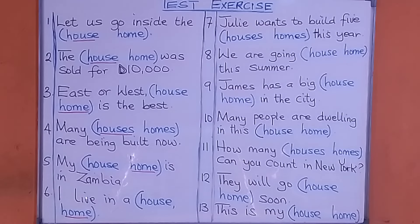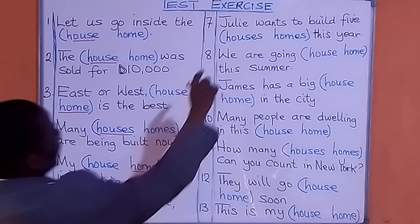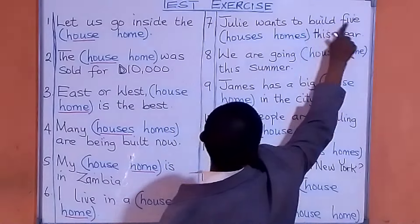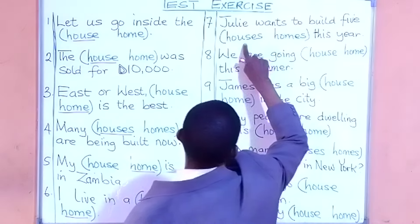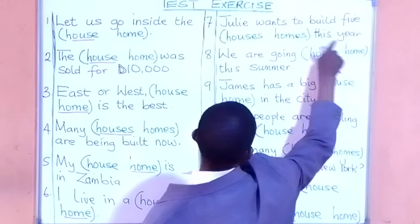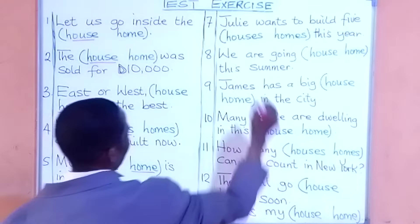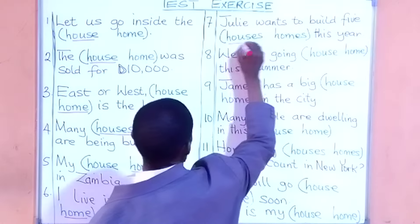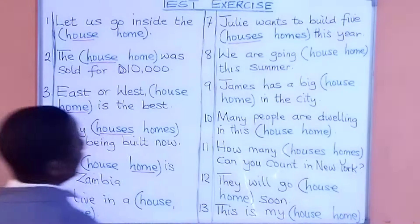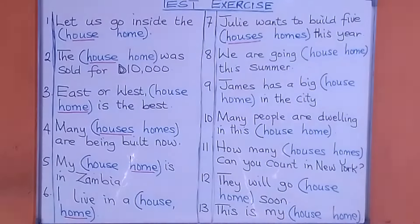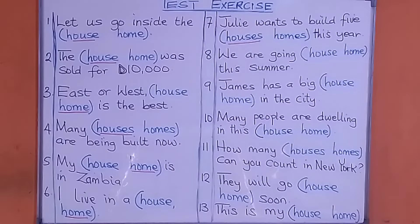Number seven: 'Julie wants to build five ___.' What are we going to put there? Julie wants to build five houses this year.